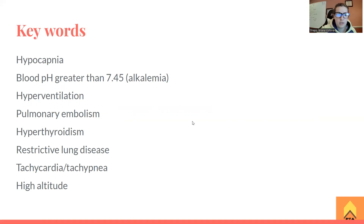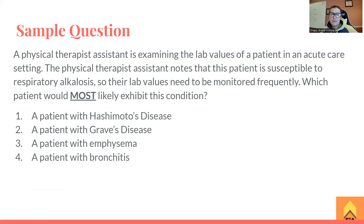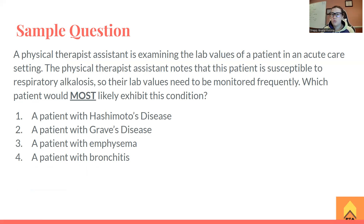Sample question: A physical therapist assistant is examining the lab values of a patient in an acute care setting. The PTA notes that this patient is susceptible to respiratory alkalosis and their lab values need to be monitored frequently. Which patient would most likely exhibit this condition? One: a patient with Hashimoto's disease. Two: a patient with Graves' disease. Three: a patient with emphysema. Four: a patient with bronchitis.